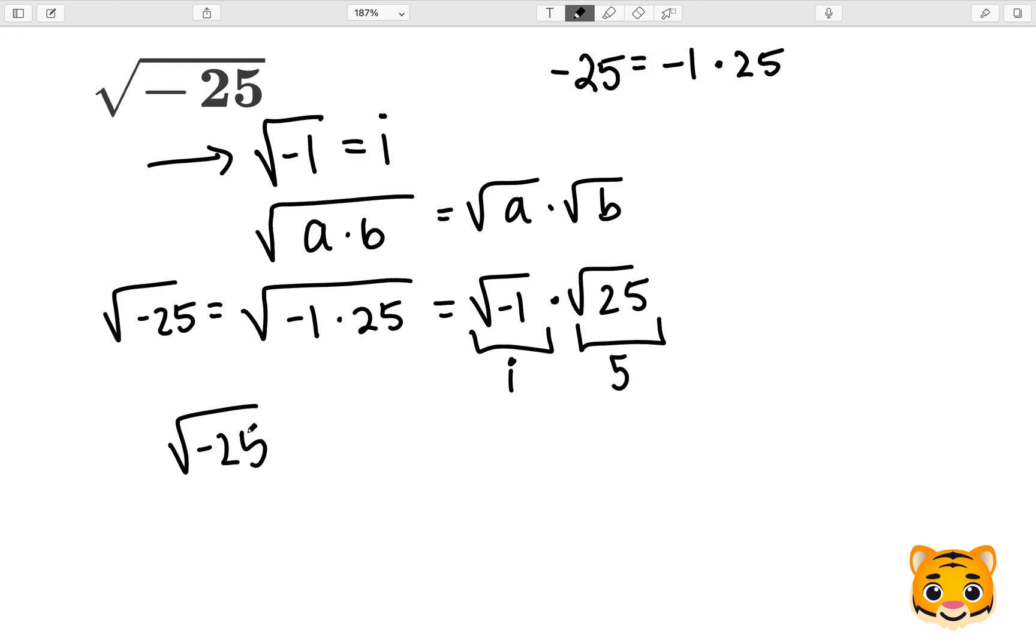Therefore, the square root of negative 25 is i times 5, or as we usually write it, 5i. This will be the solution to our problem. So the square root of negative 25 will be 5i, where i represents an imaginary number.